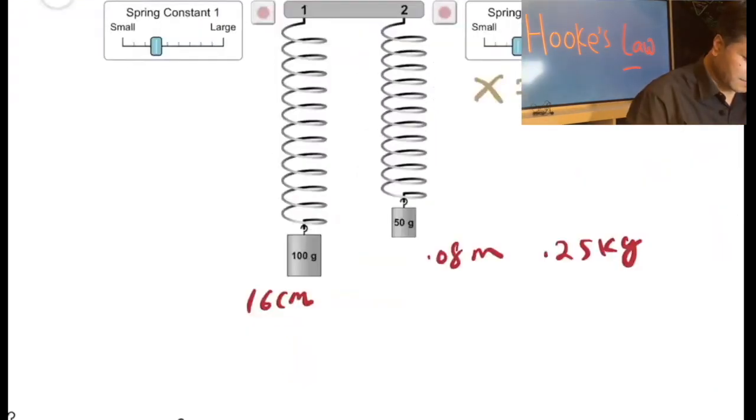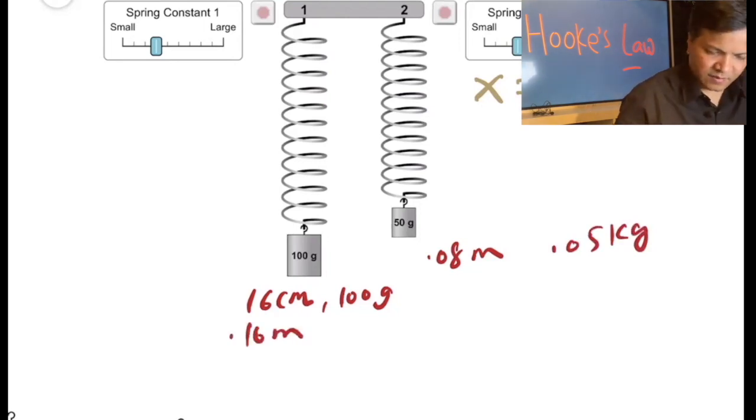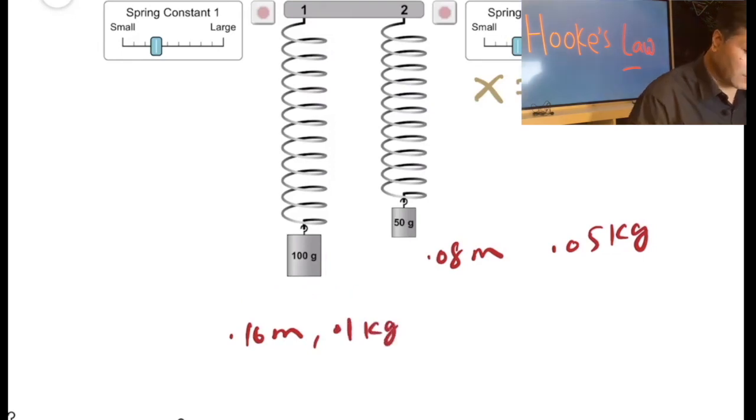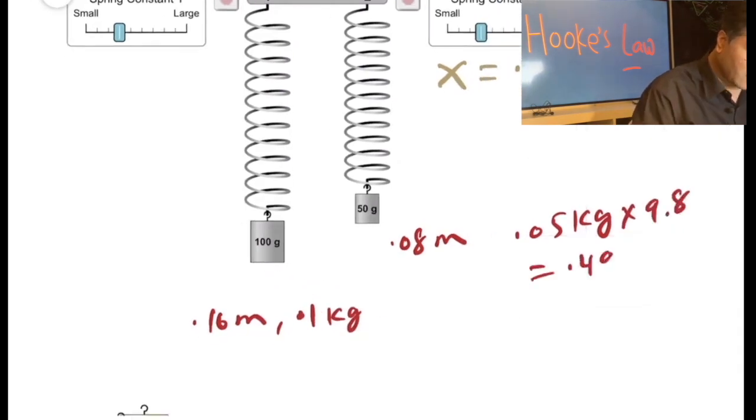Here's how you can find it: 50 grams, 50 grams, 50 grams, and this is 100 grams, 100 grams. So this is 0.05 kilograms, 0.05 kilograms, and this one is 0.16 meters. 100 divided by 1000 would be 0.1 kilograms. 0.05 times 9.8 is 0.49 Newtons, and 0.1 times 9.8 is 0.98 Newtons.